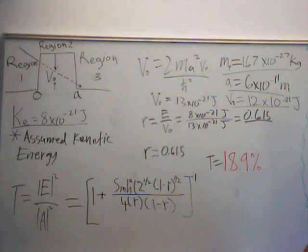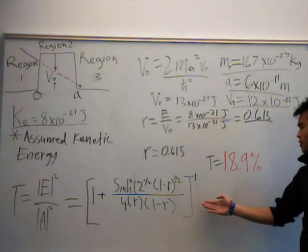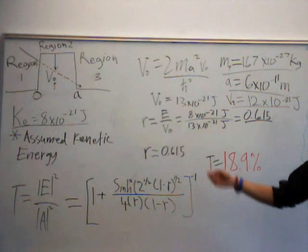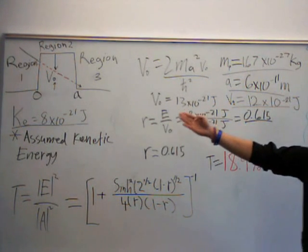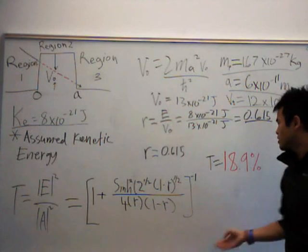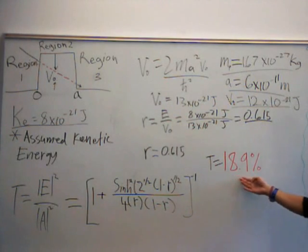Therefore, our calculated T value — the probability that our particle will pass from region 1 to region 3 — is 18.9%.